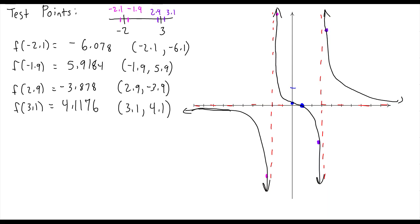Funny looking graph here, but that's our graph. This one is especially important to use the test points, because you can't tell what's going to happen in the middle without them. There's the rough sketch of our rational function that involves two vertical asymptotes.